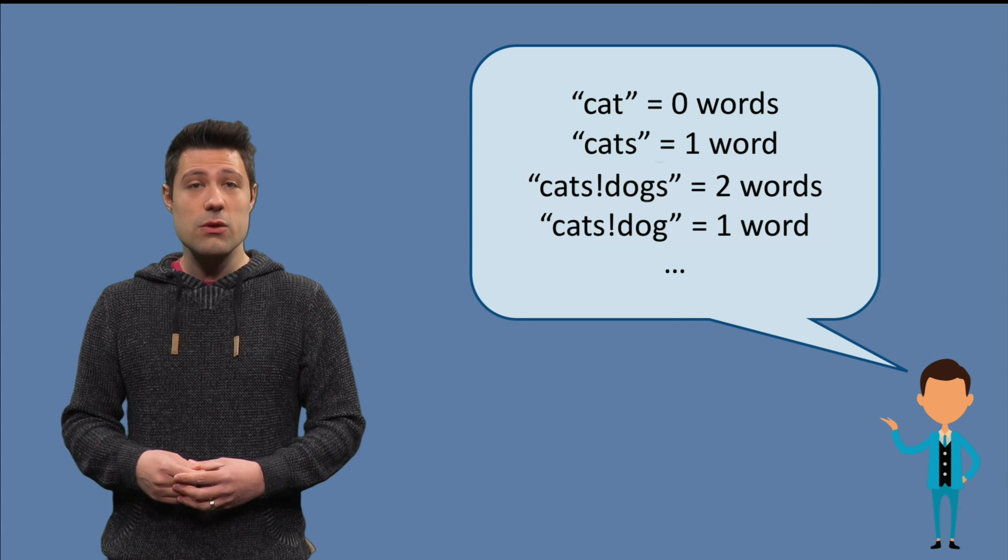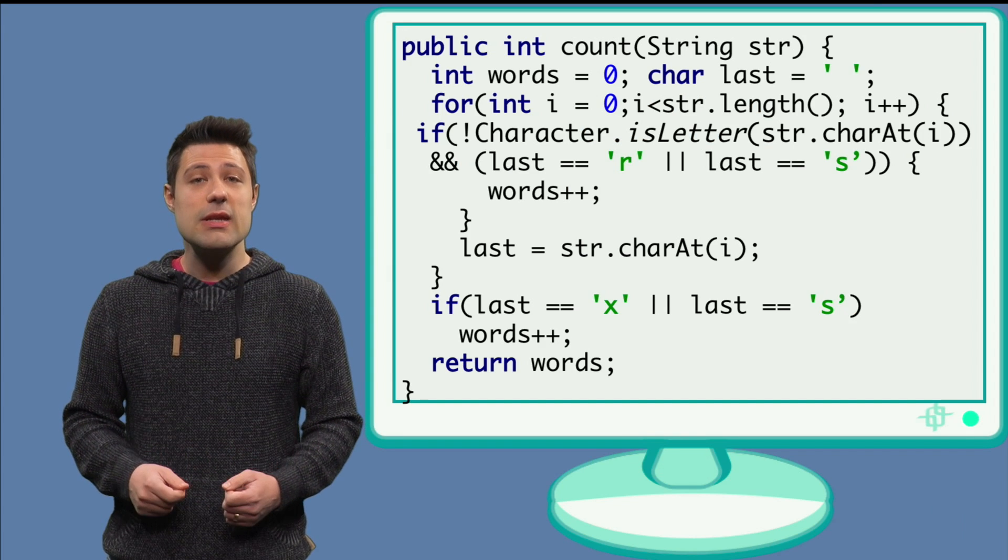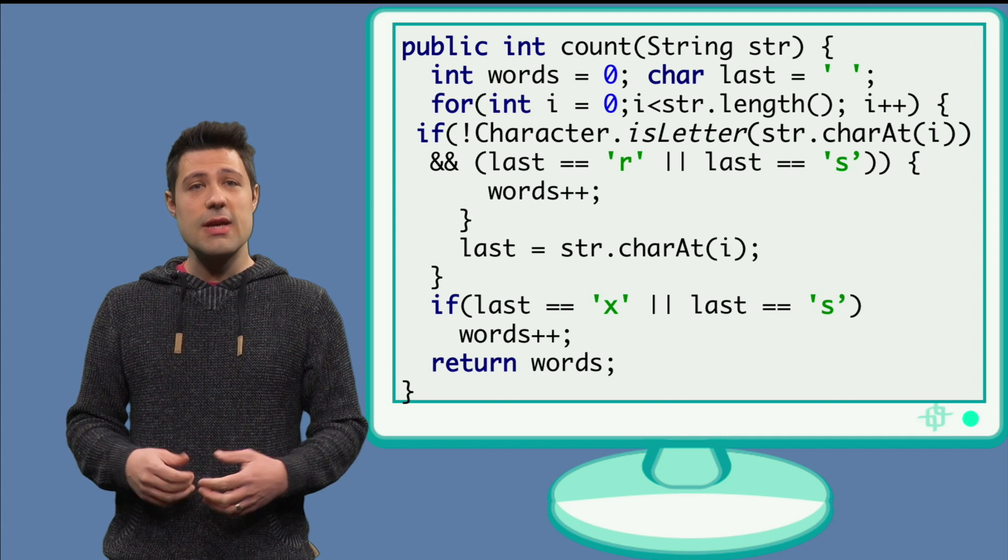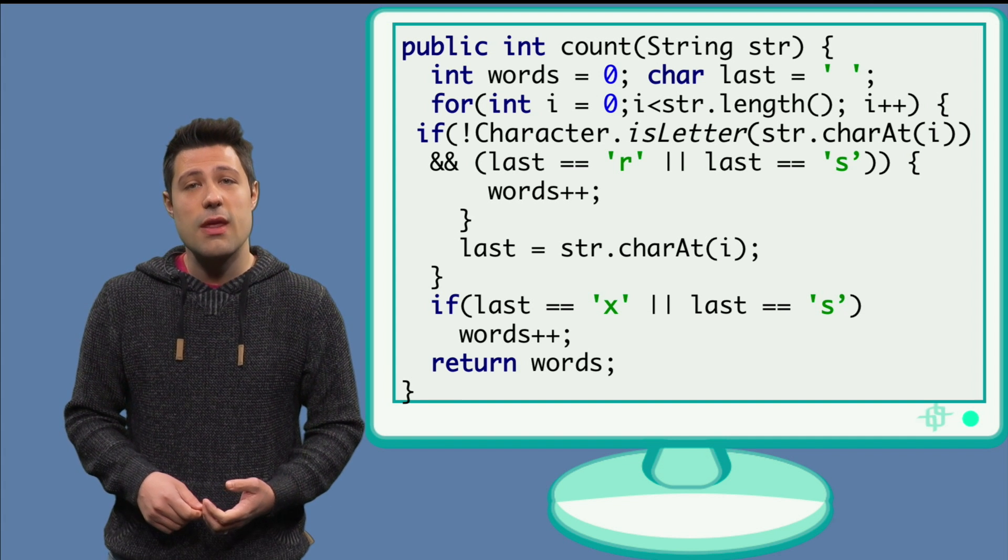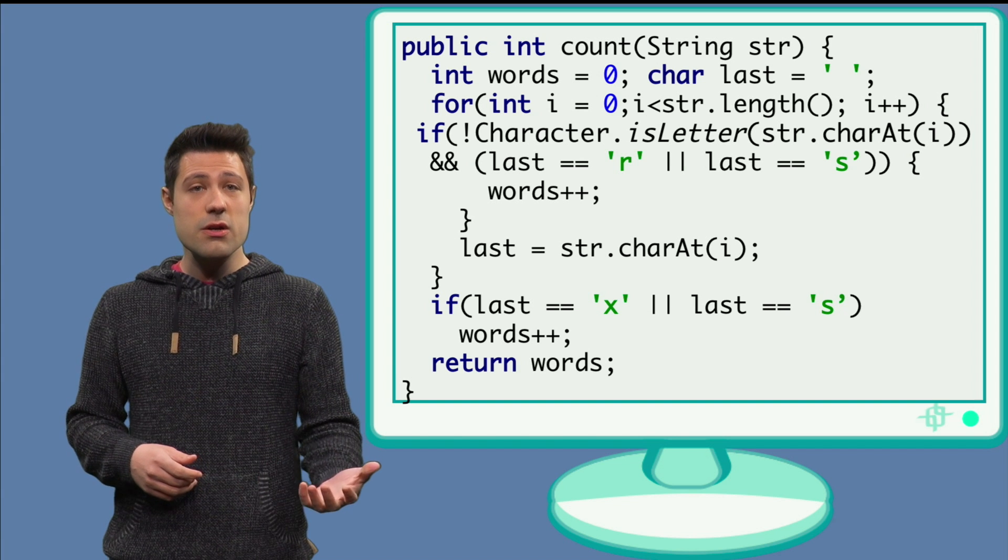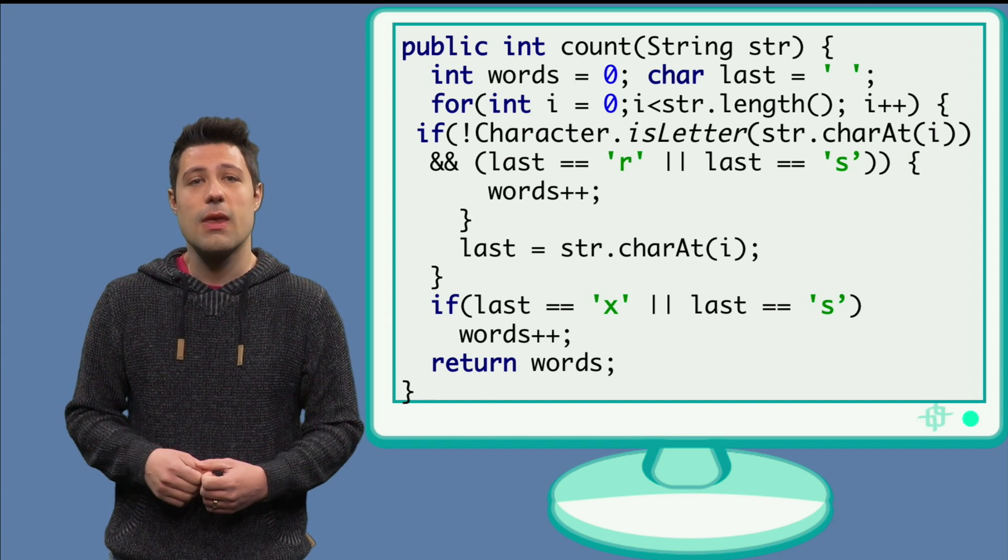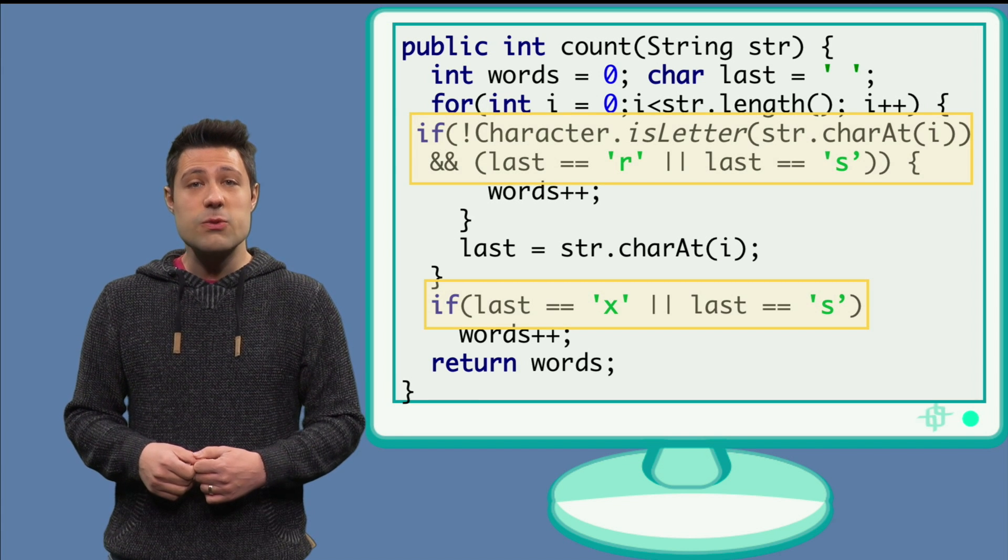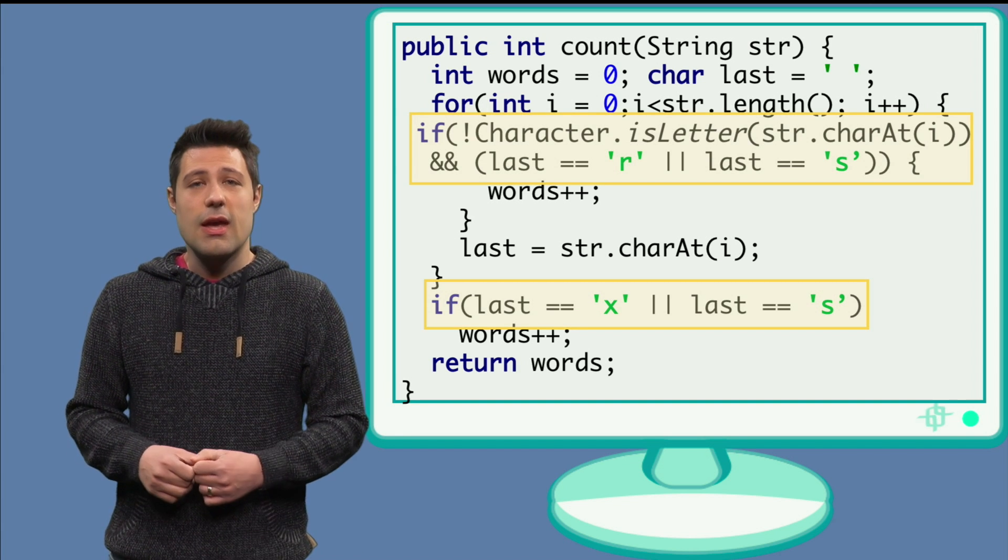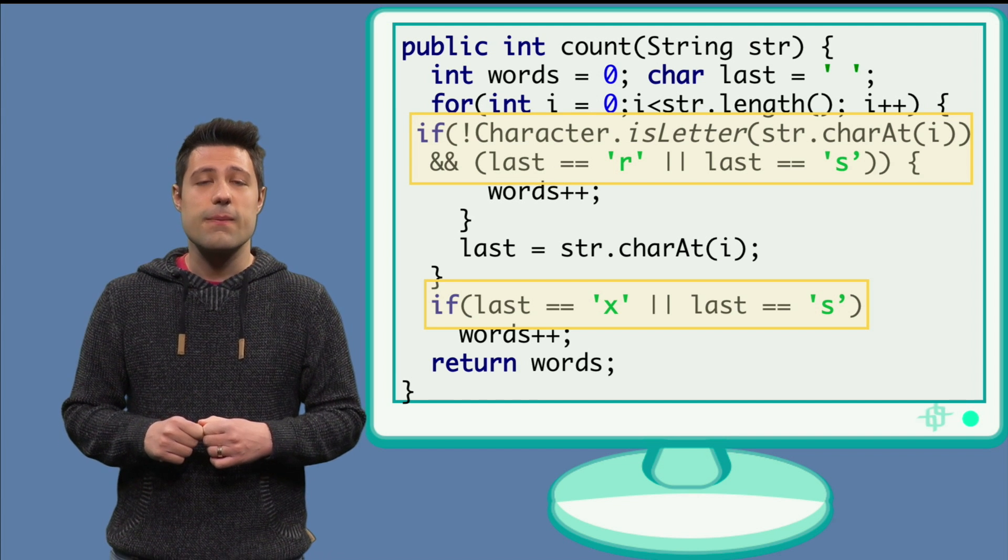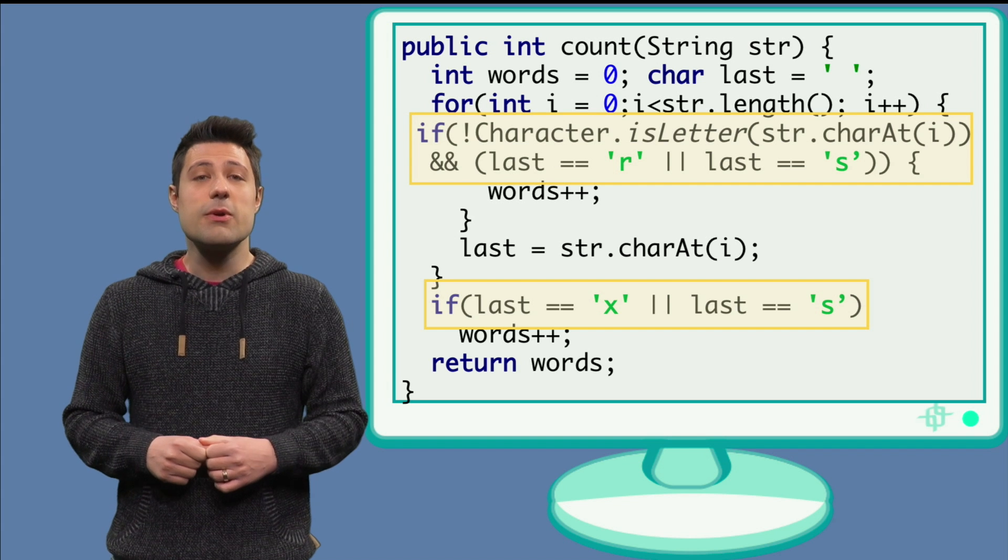Although this problem might look simple, the implementation might need a few tricks. For example, while visiting the string, we should keep track of the last character we visited, so that as soon as we find something that is not a letter, we check if the last character was either an S or an R. As you can see, the if expressions we have there are quite complex, and they create a good number of different paths that our program can take, and this definitely requires some good testing.